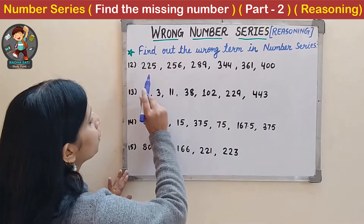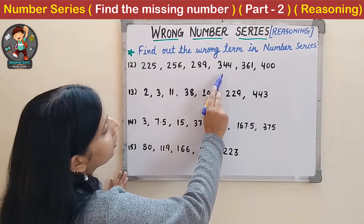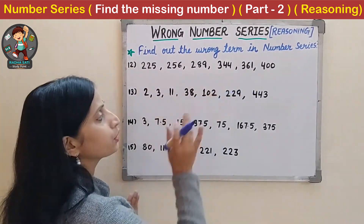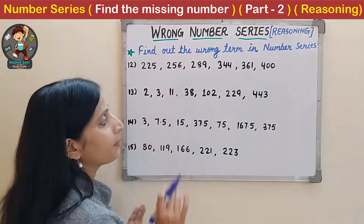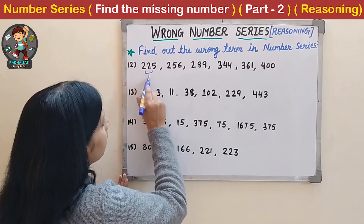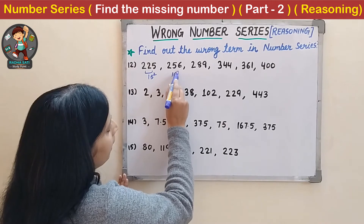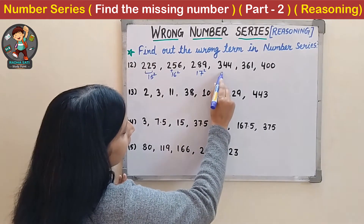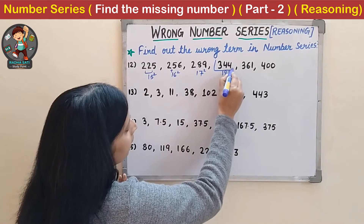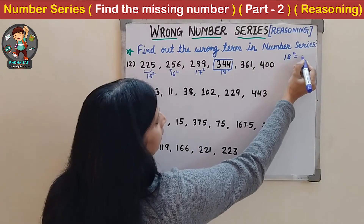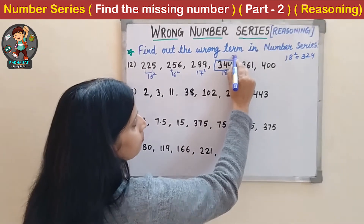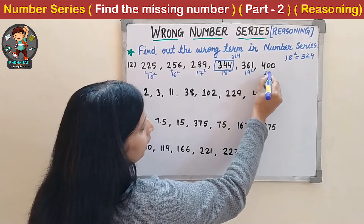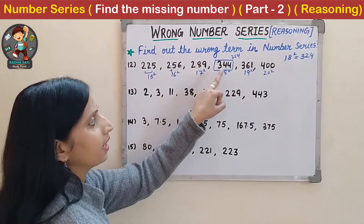Now the next number series is 225, 256, 289, 344, 361 and 400. If you know the squares of numbers, you will easily recognize this is a square-based series. 225 = 15², 256 = 16², 289 = 17². So the next must be 18² = 324, but 18² is not 344. So instead of 344 it should be 324. The rest: 19² = 361 and 20² = 400 are correct. So the wrong term is 344.